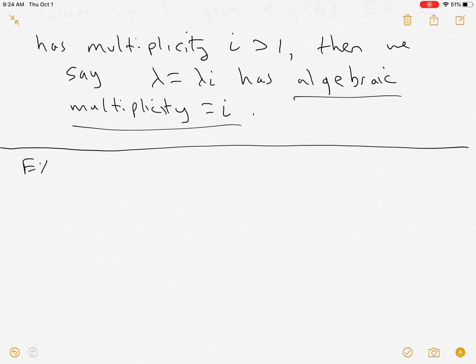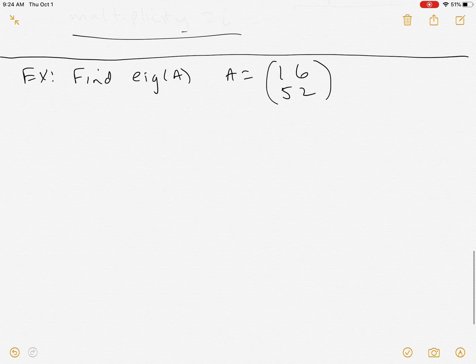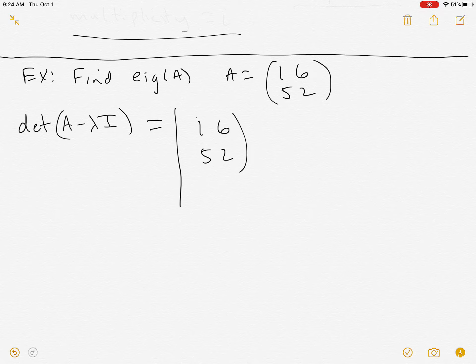Okay, so let's go back to our example, and we're going to find the eigenvalues of A, where A is the matrix (1, 6, 5, 2). What we're doing is we're taking the determinant of (A - λI), which is the determinant of (1, 6, 5, 2) minus (λ, 0, 0, λ), setting that equal to 0.